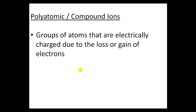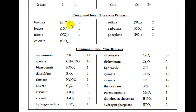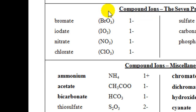So what are polyatomic ions? They are groups of atoms that are electrically charged due to the loss or gain of electrons. As seen on the common valence sheet, you will find they come in groups of two or more different types of elements. For instance, the bromate ion contains a bromine and three oxygens, all bonded together in one large compound, and together they have a 1- charge.